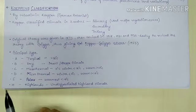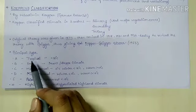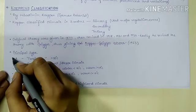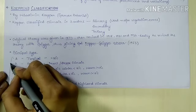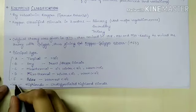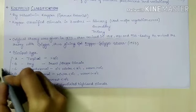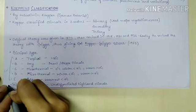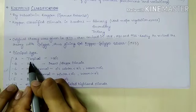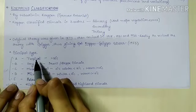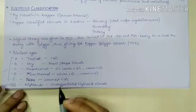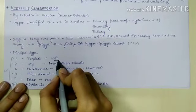The principal types were designated by capital letters, with the first five based on vegetation type and the last one based on altitude. Type A represents humid tropical climate, characterized by a winterless season with warm and moist conditions throughout the year, and the mean temperature is always above 18 degrees Celsius.